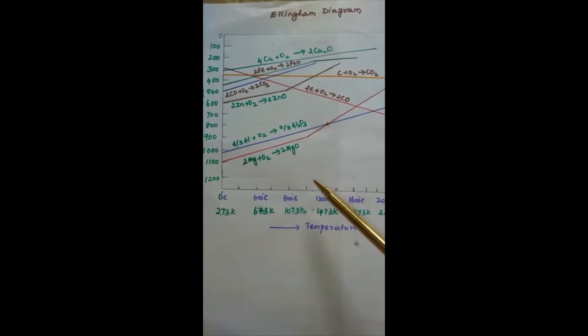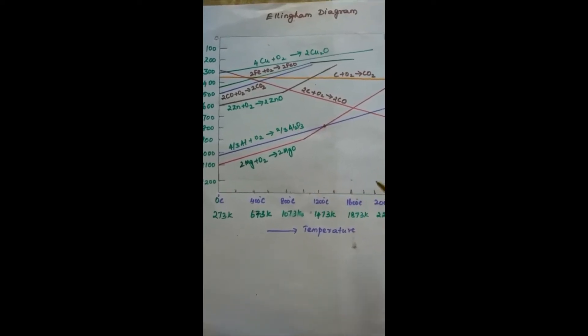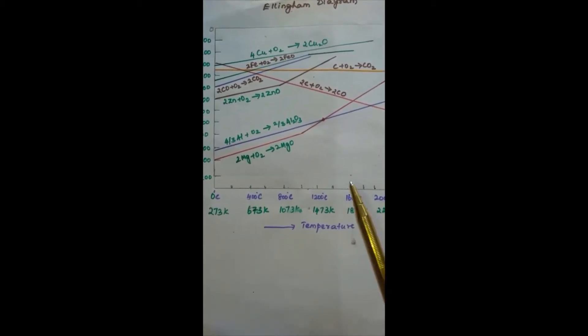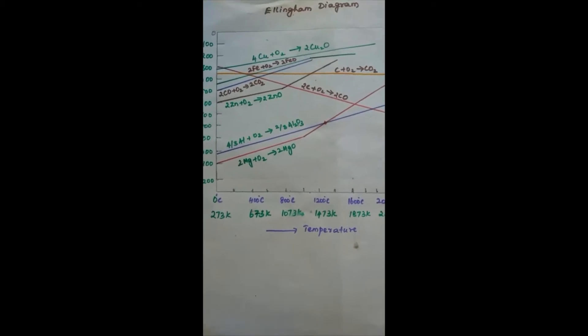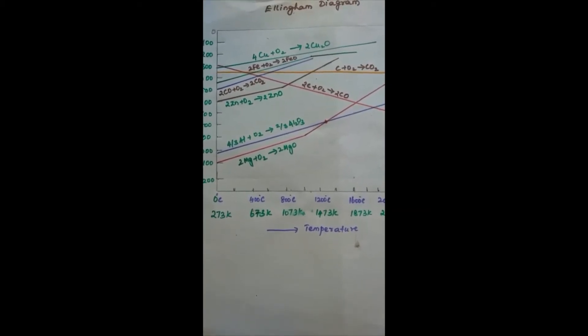This Ellingham Diagram helps us in predicting the feasibility of thermal reduction of an ore. It also gives information for the criterion of feasibility at a given temperature that the Gibbs energy of the reaction must be negative.